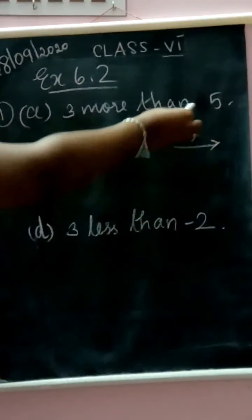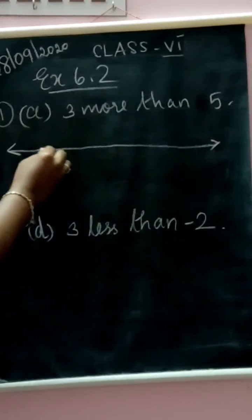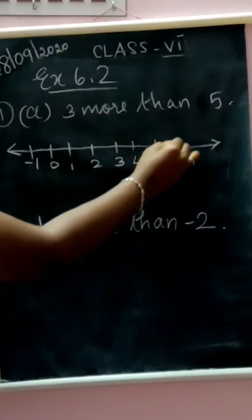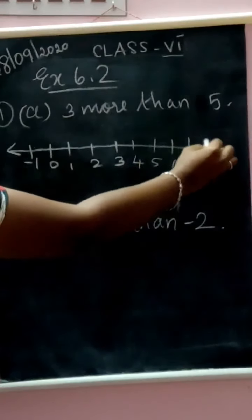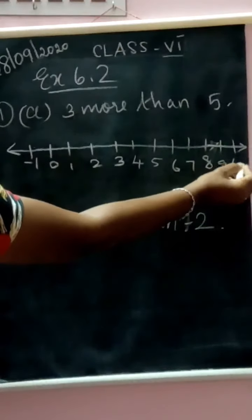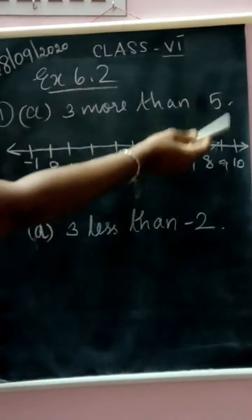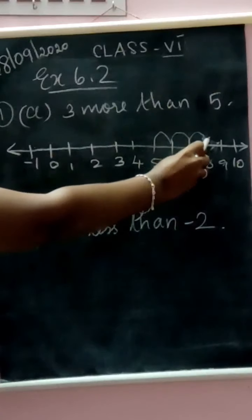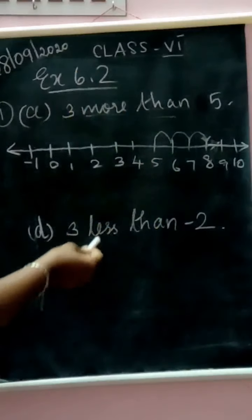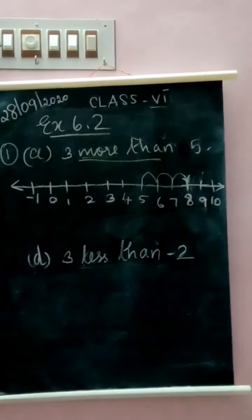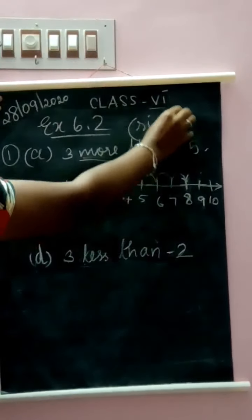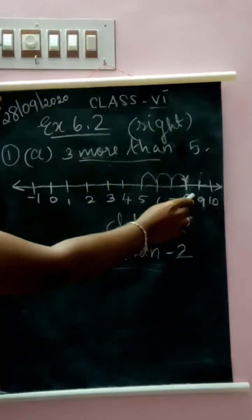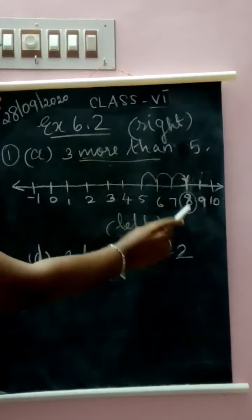Draw a number line. Since it is plus five, I will start from minus 1 and go to zero, 1, 2, 3, 4, 5, 6, 7, 8, 9, 10. Start from 5 and move three steps to the right — more than means move right, less than means move left. So one, two, three steps to the right and we reach 8. Three more than plus 5 is plus 8.